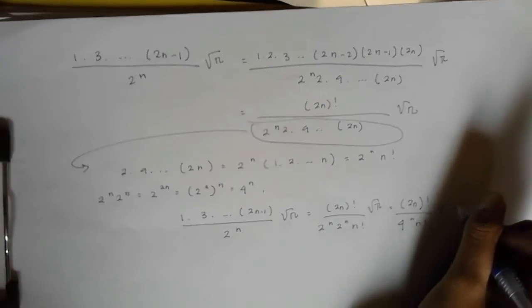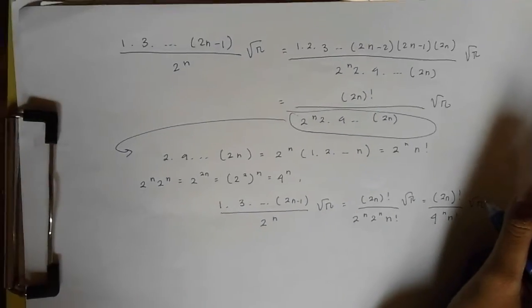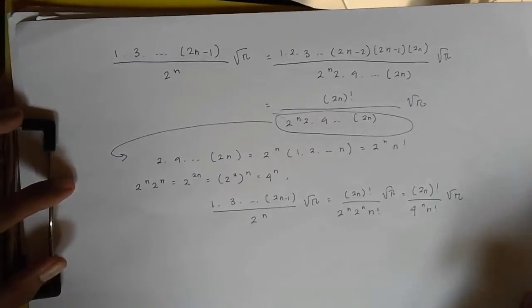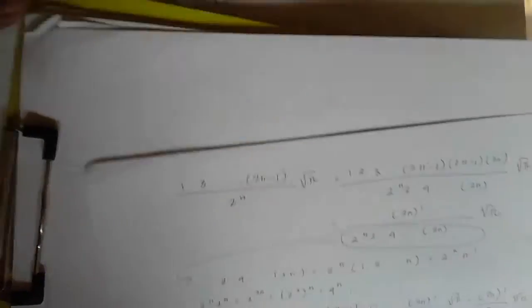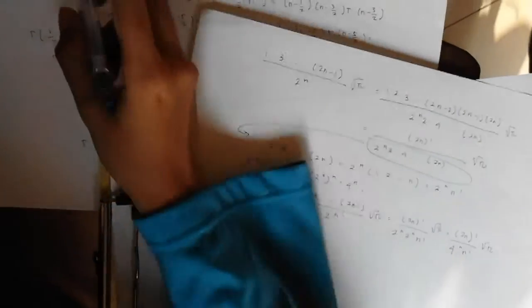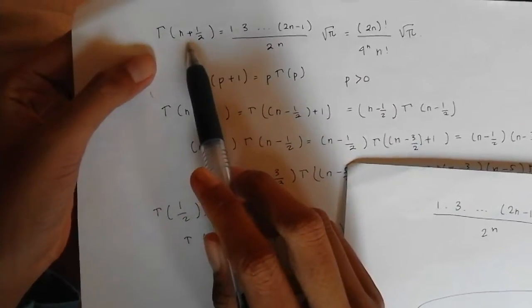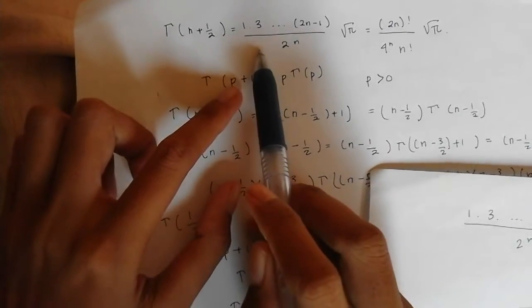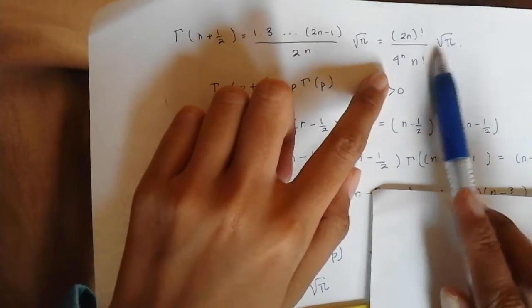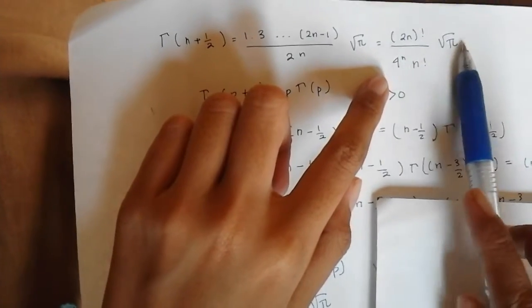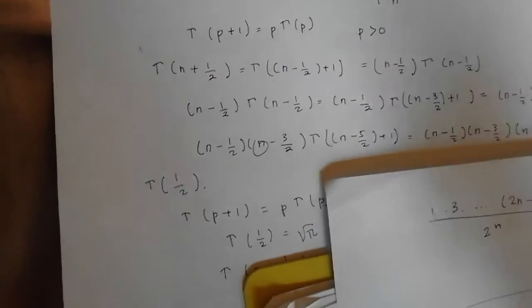So it is proven that Γ(n + 1/2) is equal to (2n)! over (4^n times n!) times square root of π. Thank you for watching, greetings from Surabaya. Wassalamualaikum warahmatullahi wabarakatuh.